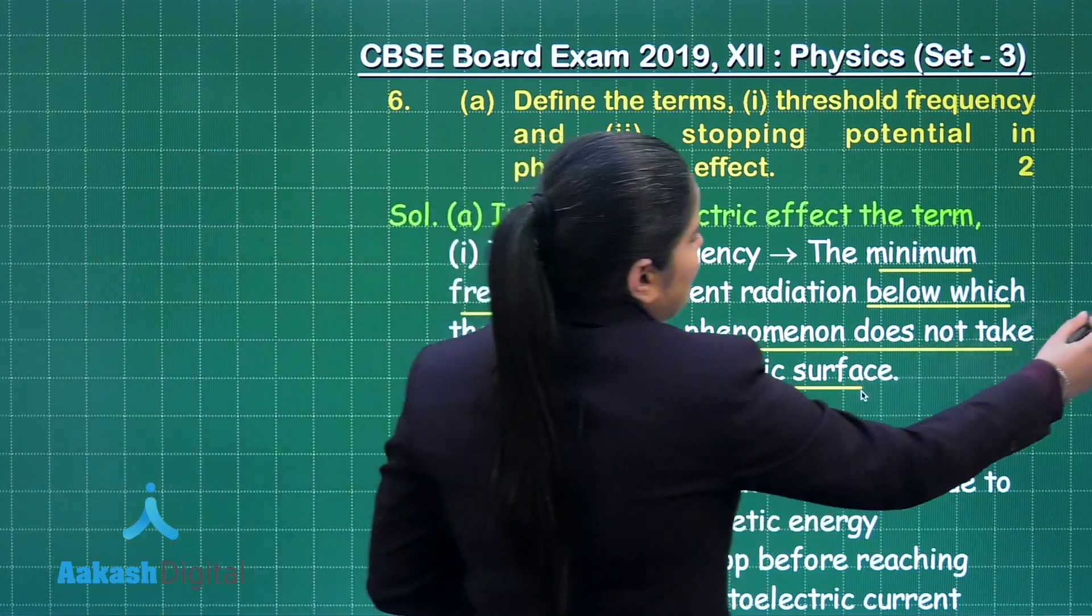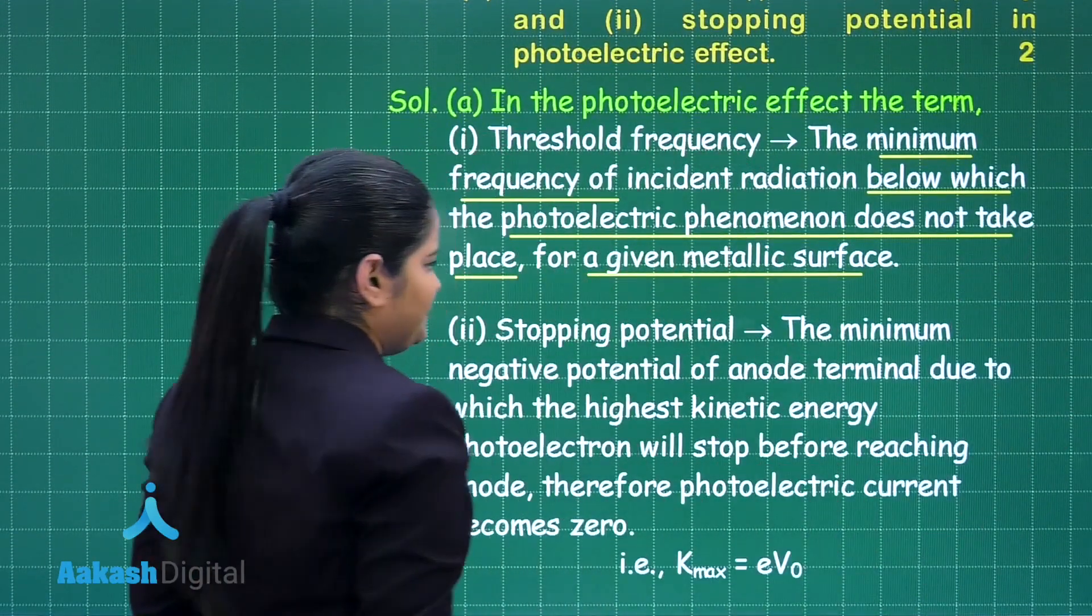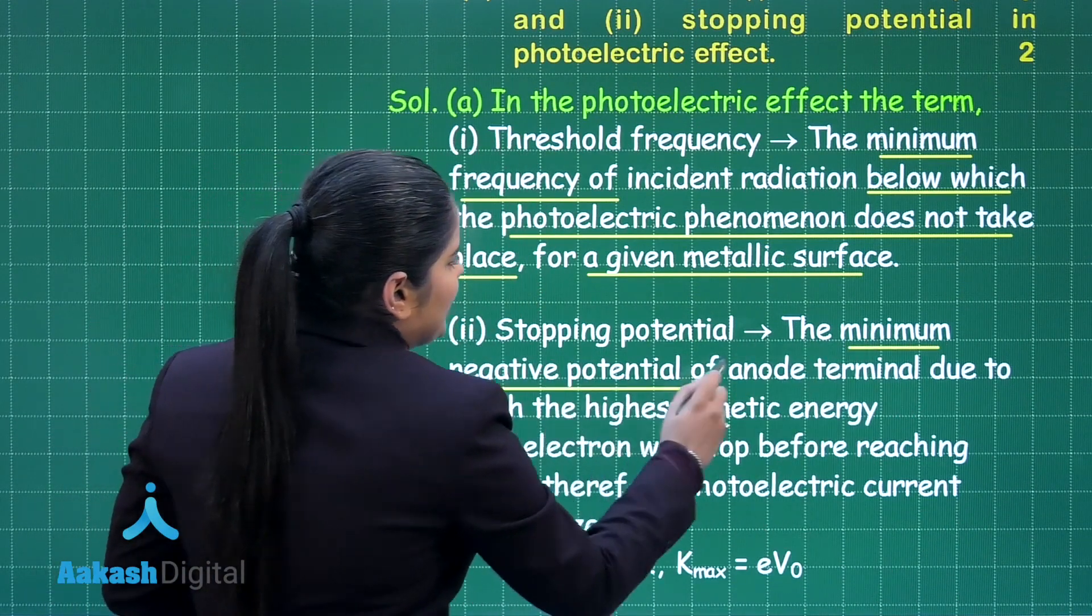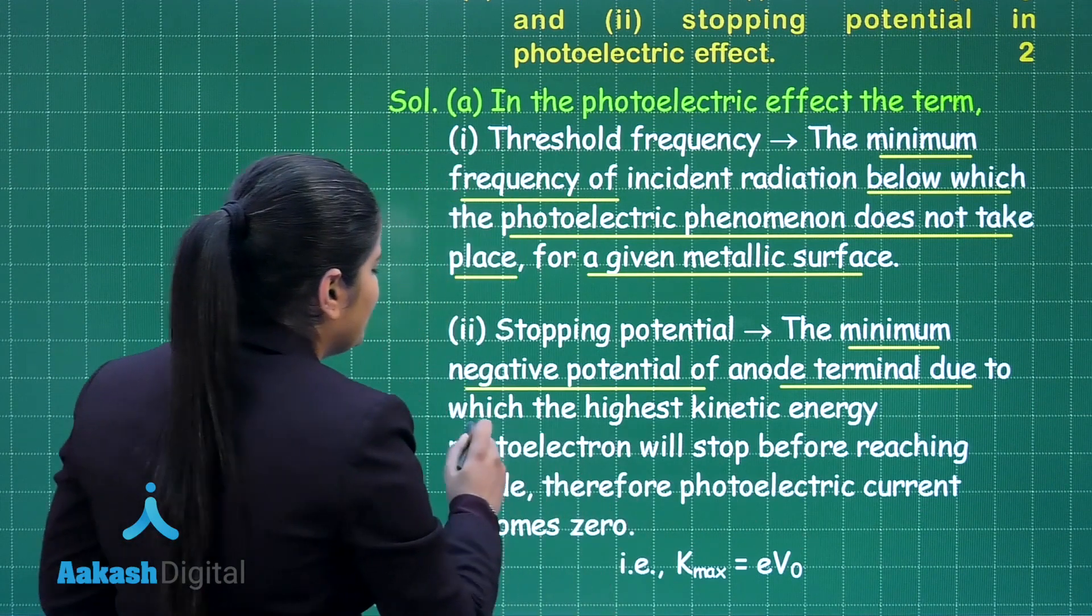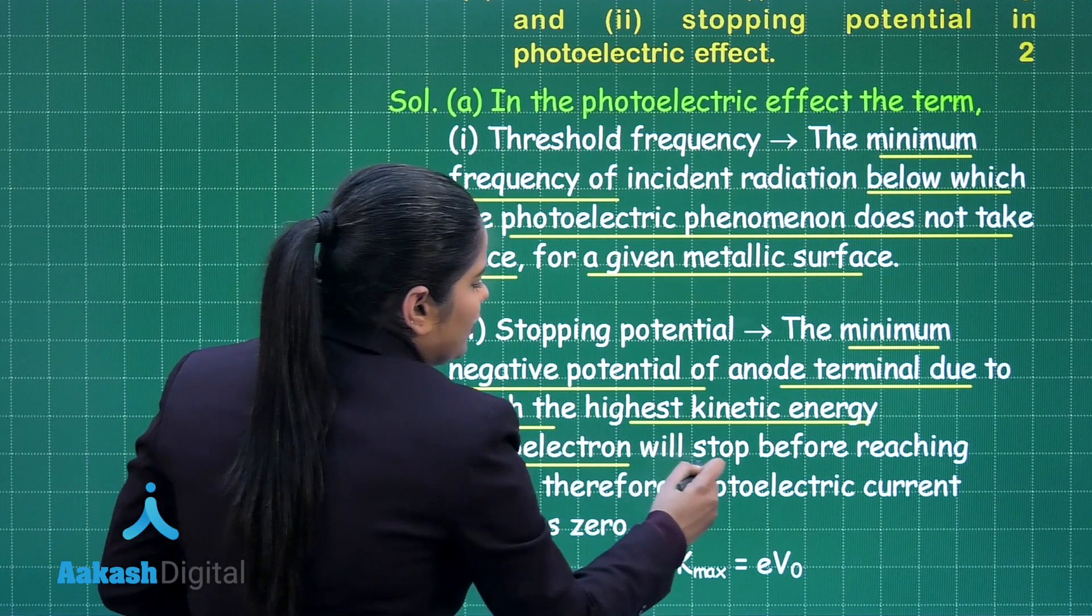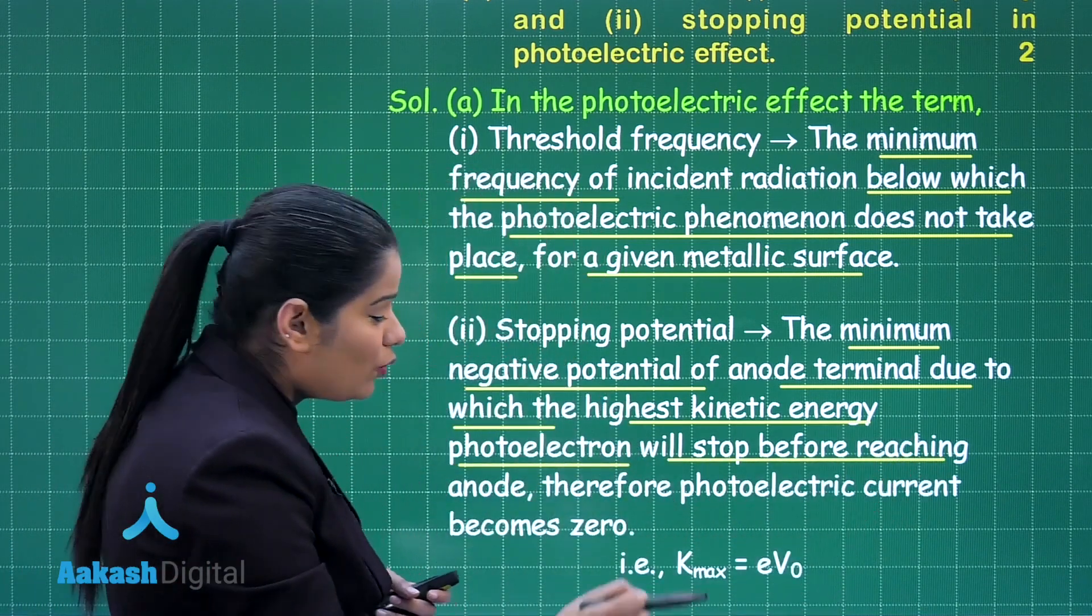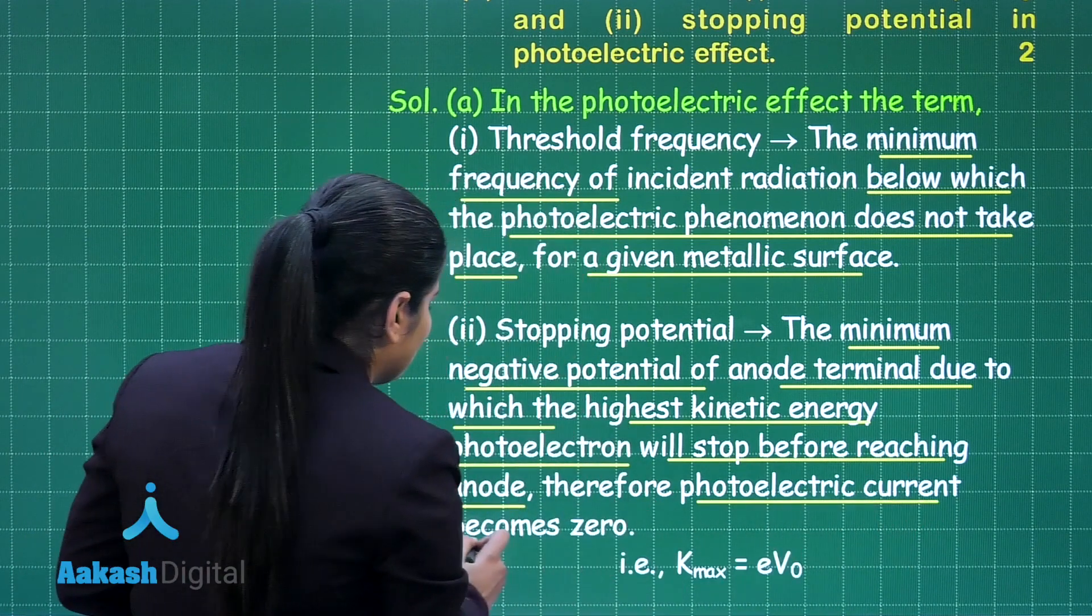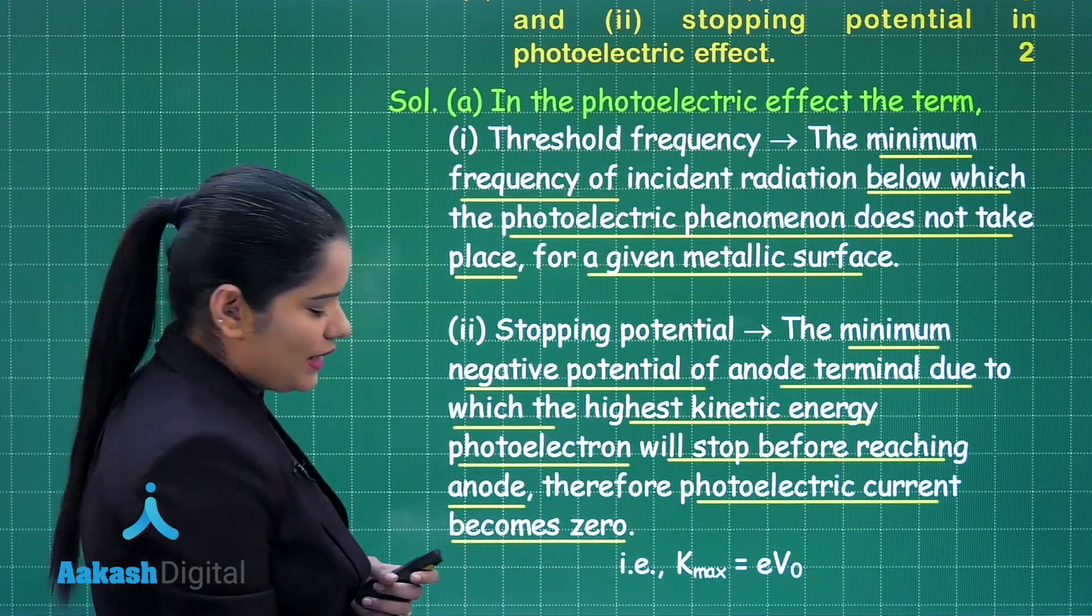Moving on to the definition of stopping potential. What is that? The minimum negative potential of anode terminal due to which the highest kinetic energy photoelectron will stop before reaching the anode. Therefore, the photoelectric current becomes 0.